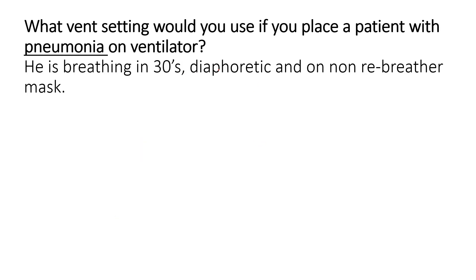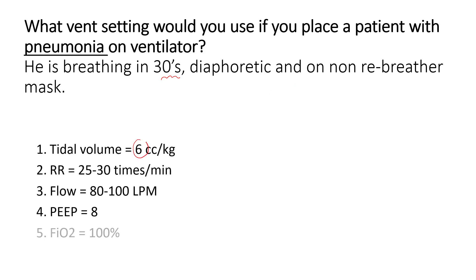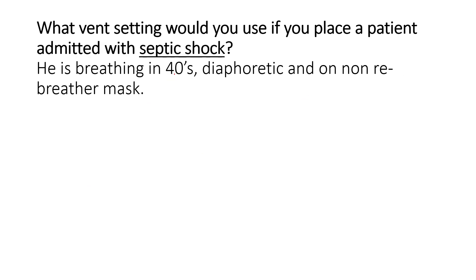There is a patient with pneumonia who is breathing in the 30s. He is diaphoretic and requiring a non-rebreather mask, and you plan to intubate this gentleman. You would start him at a lower tidal volume of 6 cc per kg body weight, match the respiratory rate to what he was breathing prior to intubation, use high flow rates, a PEEP of 8, and FiO2 of 100%.